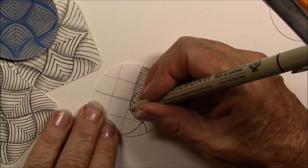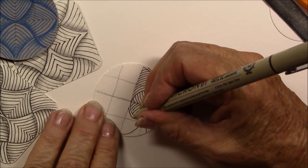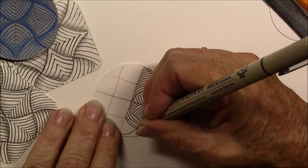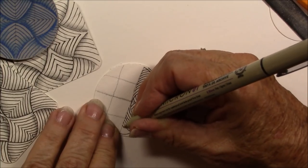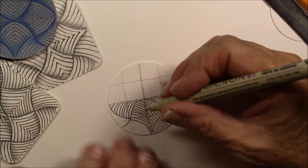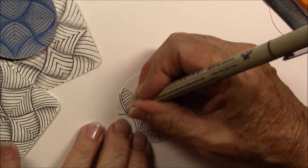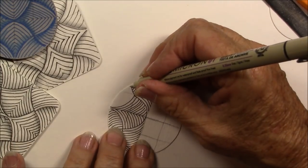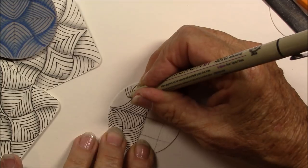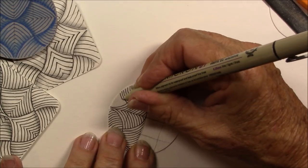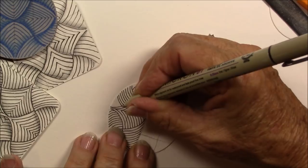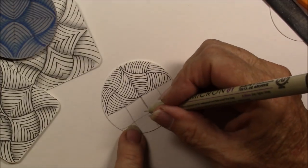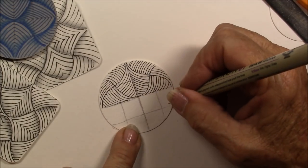Now I'm going to rotate, and I'm going to echo this line. Now you can kind of see the pattern start to develop. And I'm going to do the lower four.